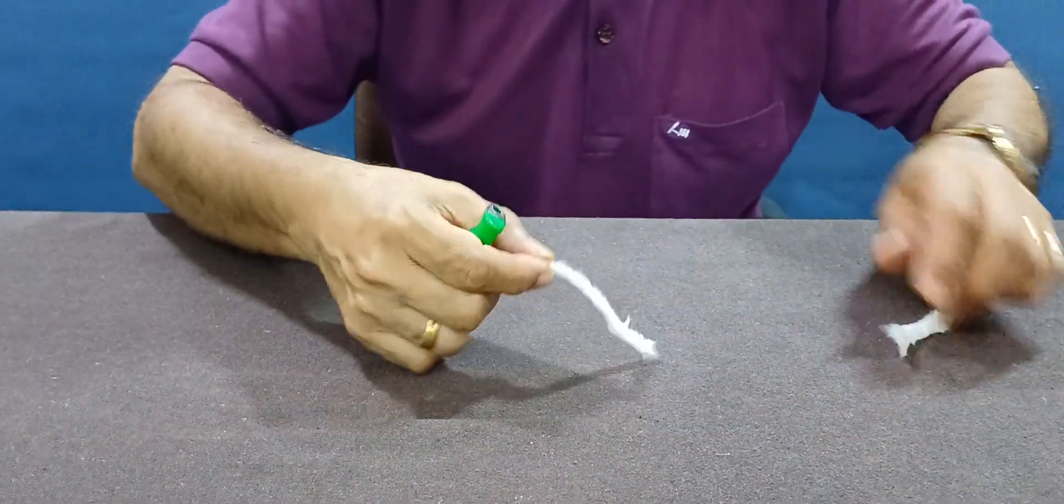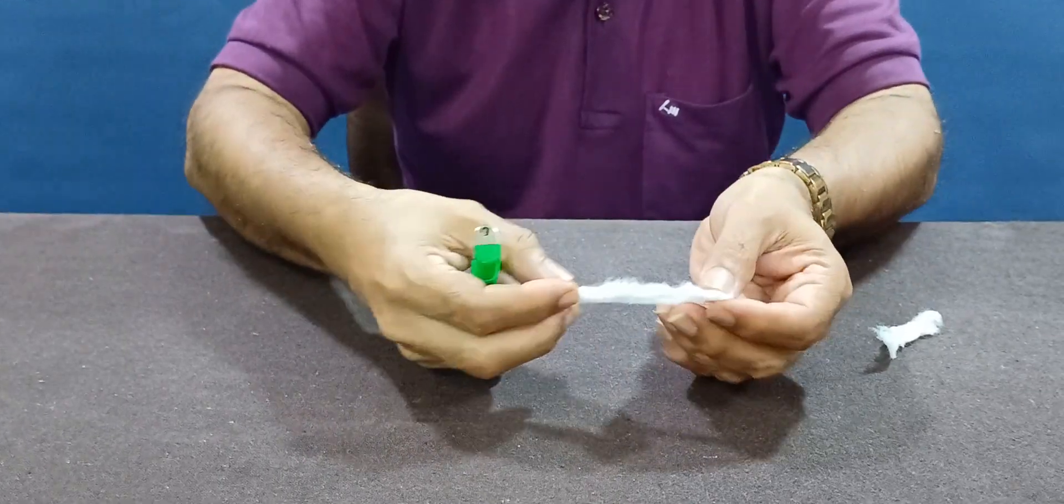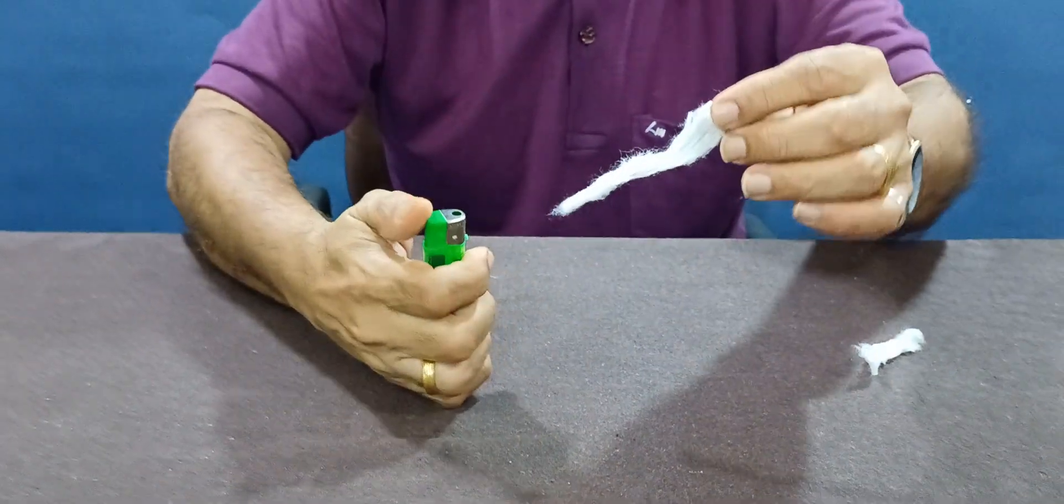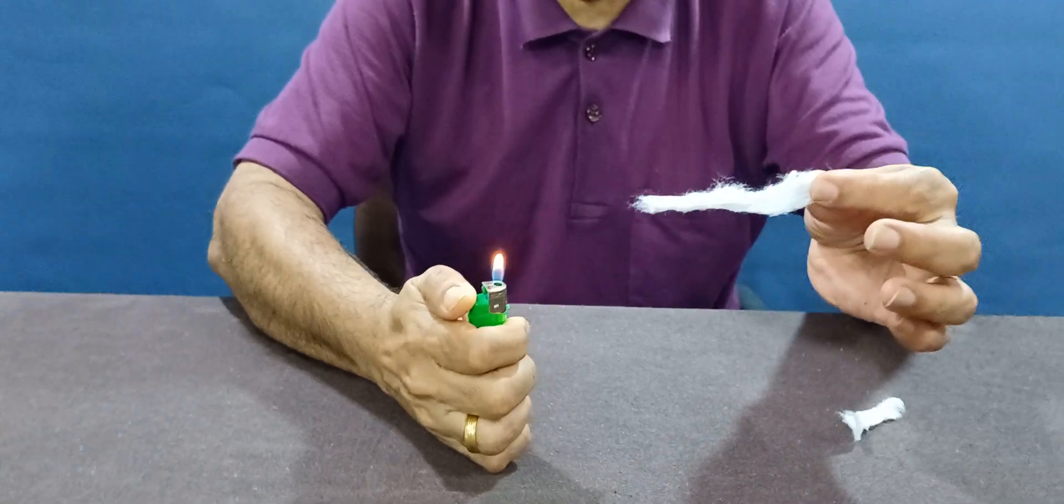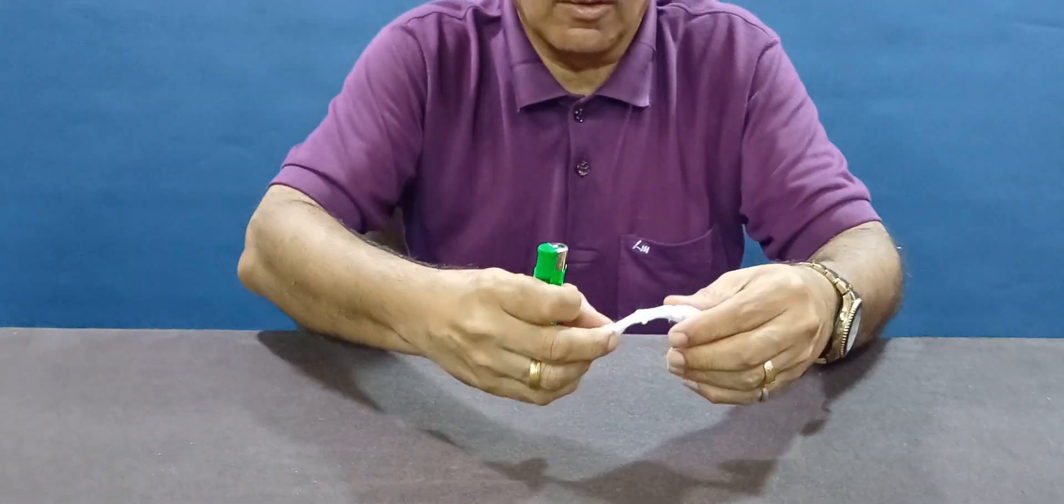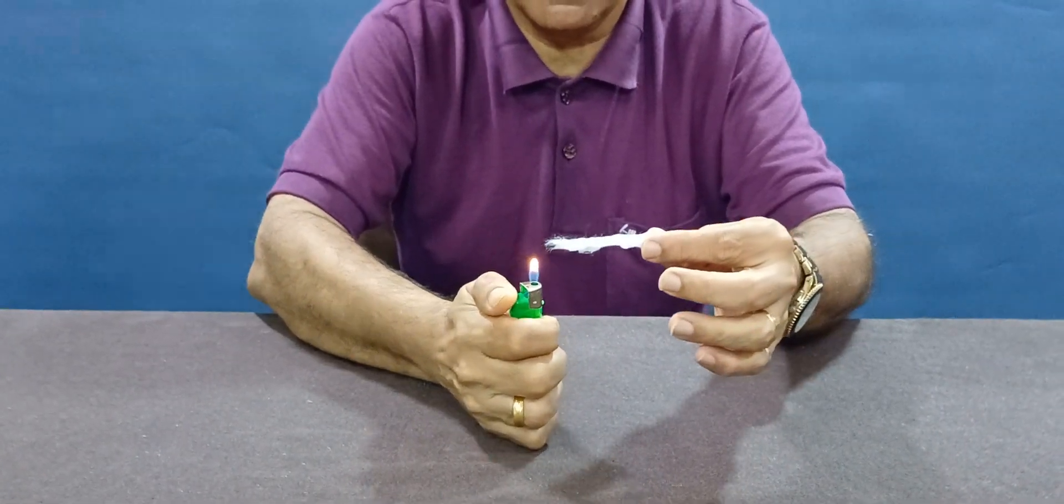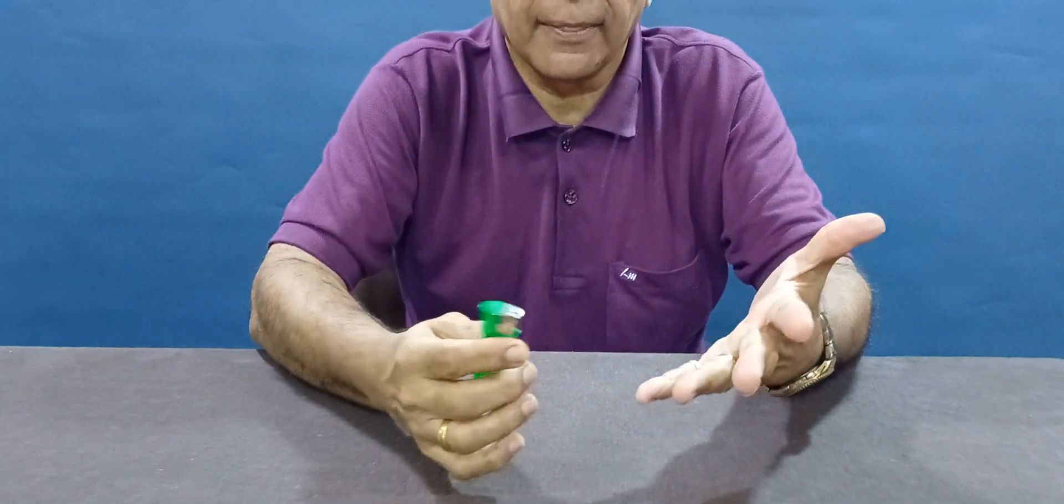Okay, so this is a piece of flash cotton. See how the flash cotton vanishes. One more time, watch carefully the magic of flash cotton. Thank you.